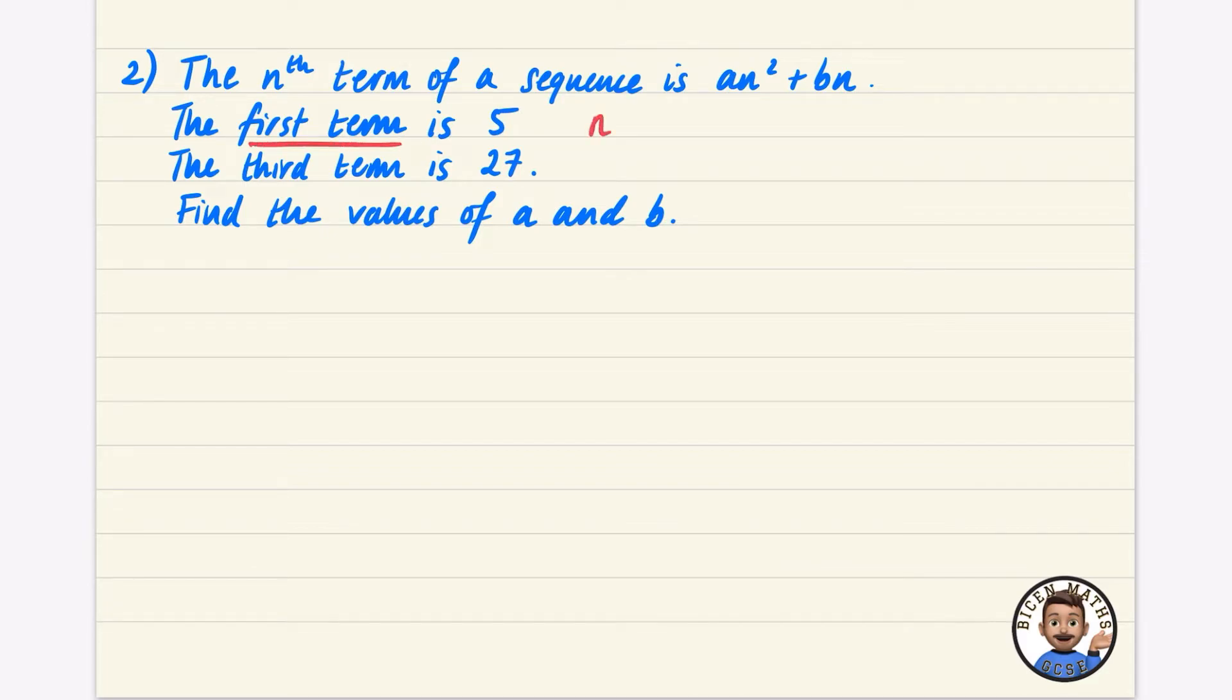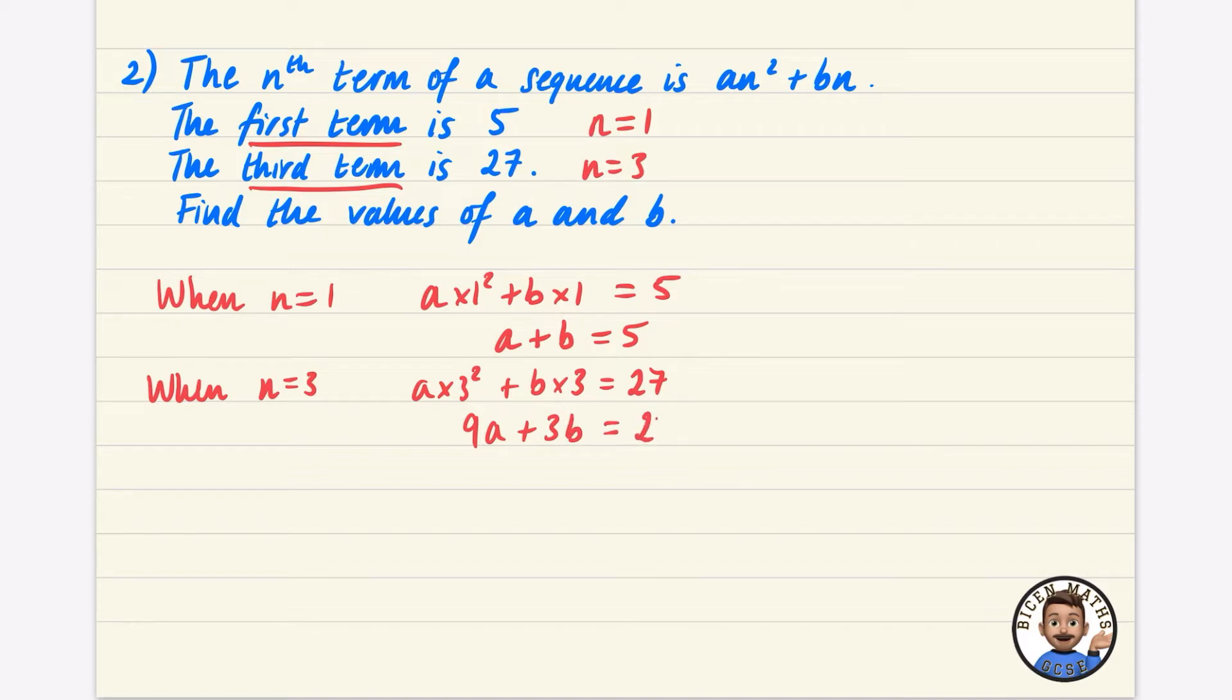If it's the first term, we're saying that n is equal to 1. So when n equals 1, the formula would be a times 1 squared plus b times 1. It says that that is equal to 5. So a plus b equals 5. And when n is equal to the third term, n is equal to 3, we would get a times 3 squared plus b times 3 is equal to 27. So 9a plus 3b is equal to 27.